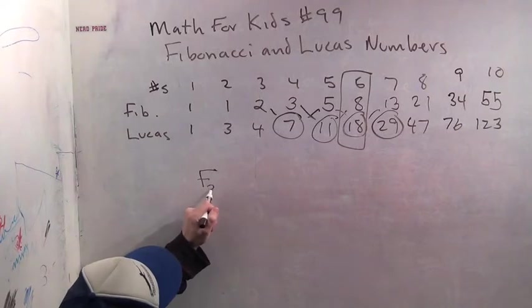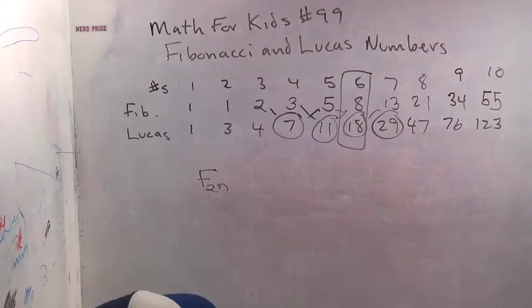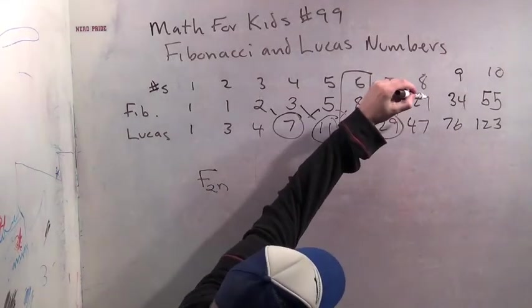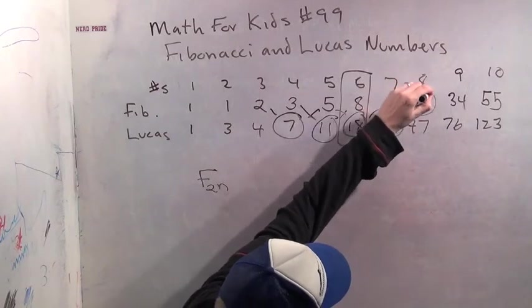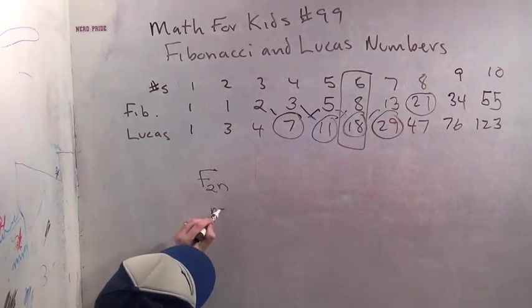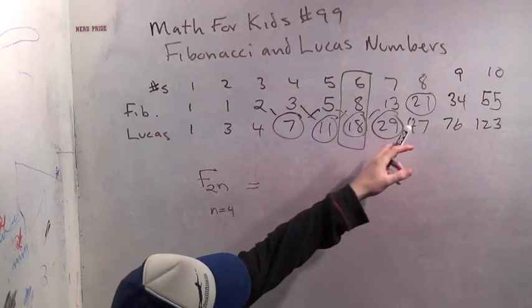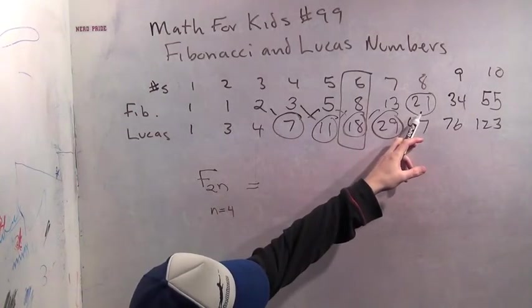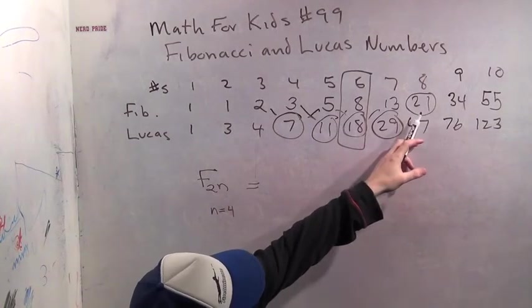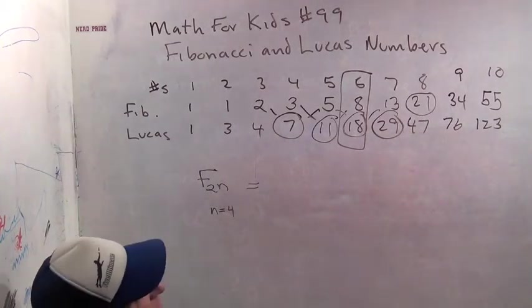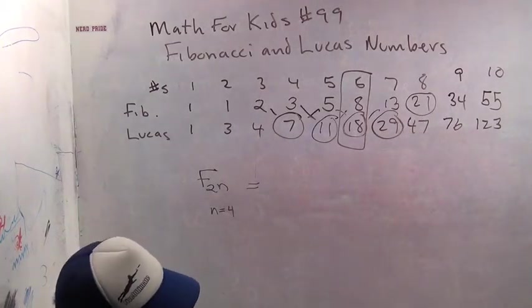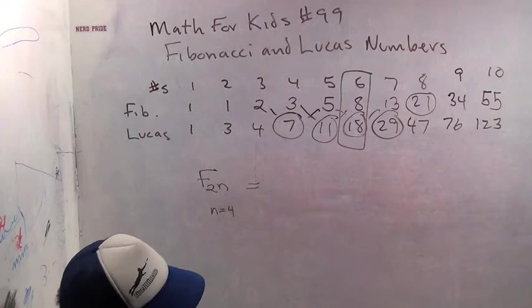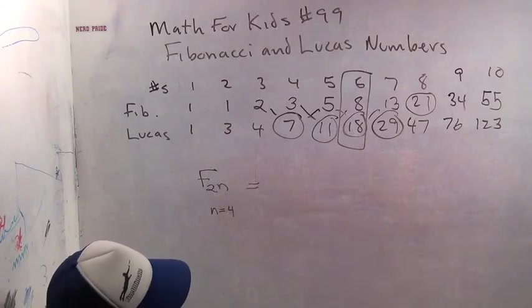We're going to look for a pattern on the even Fibonacci numbers. Fibonacci number 2N. So Fibonacci number 8, for example. This would be where N equals 4. Do you see any way to make a 21? What does 21 factor into? It's 3 times 7. Do you see any 3 times 7s anywhere?